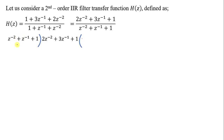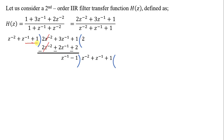So here we have to cancel out terms. Multiplying and subtracting — after the z⁻² terms cancel out, we continue. We subtract the z⁻¹ terms: z⁻² minus z⁻¹. Again subtract — minus and plus terms cancel. So 2z⁻¹ plus 1 remains. Again we will divide z⁻¹ minus 1 by this remainder value.